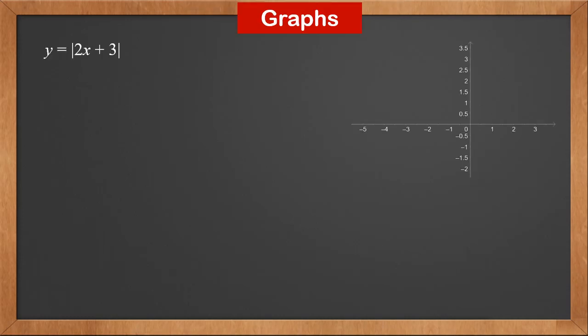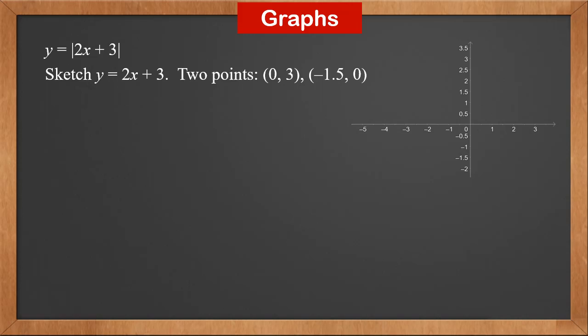Now let's see how to sketch the graph of linear modulus functions. For y = |2x + 3|, first we sketch y = 2x + 3. We find 2 points on the line: (0, 3) and (−1.5, 0), and connect them. This is the line y = 2x + 3.